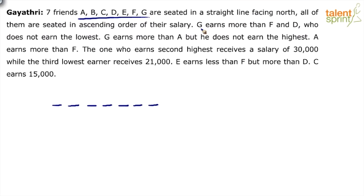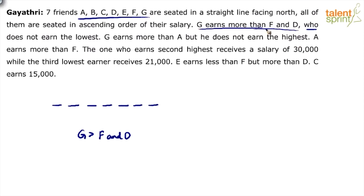Now look at the points here. G earns more than F and D, who does not earn the lowest. So G is greater than F and D. Who does not earn the lowest? That refers to D — D does not earn the lowest. So D cannot come in the first position.